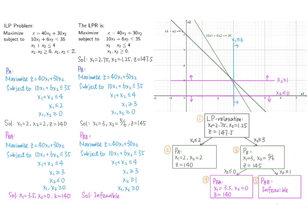For subproblem P_BB, however, the feasible set is empty, so it is infeasible. We do not need to branch P_BB further. Since there are no other nodes to branch, we have finished the procedure. We have found that the point (2, 2) satisfies the ILP problem and gives a maximum objective value of z equals 140.